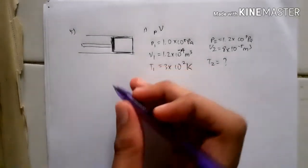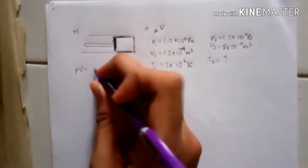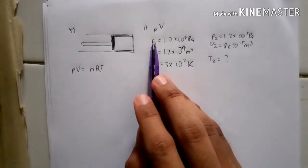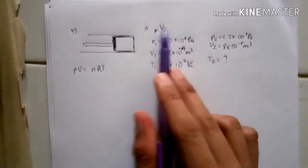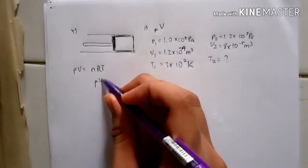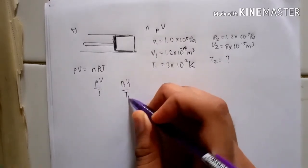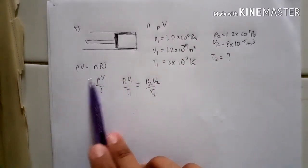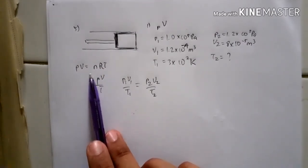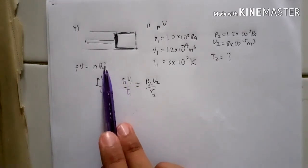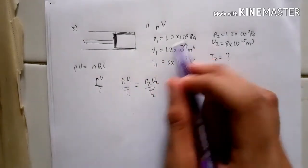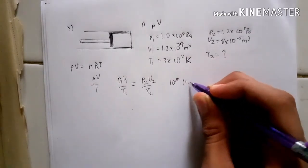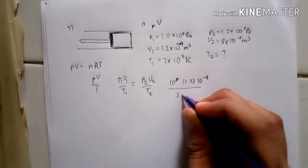This is quite easy — you just use the ideal gas equation PV = nRT, where P is pressure, V is volume, n is moles of gas, R is the ideal gas constant, and T is temperature. Because we know P, V, and T for both the initial and final states, we can use the ratio P1V1/T1 = P2V2/T2. Rearranging, we put T2 in the denominator and substitute the values: P1 is 10 to the power of 5 and V1 is 1.2 times 10 to the power of minus 4, with T1 equal to 3 times 10 to the power of 2.